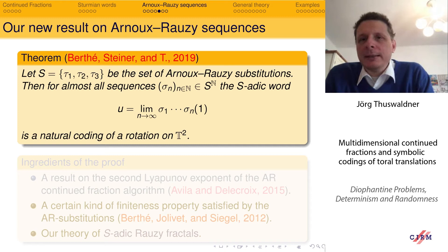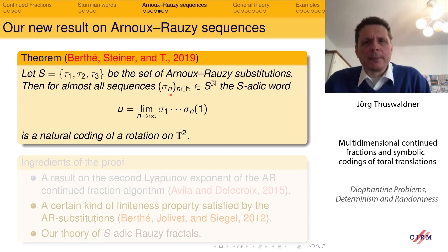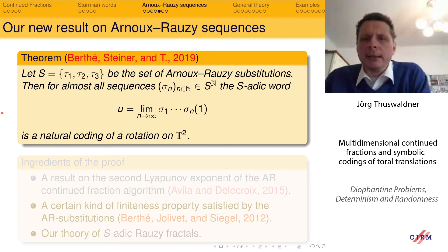If you pick Arnoux-Rauzy substitutions and create a sequence using these three substitutions, then define an S-adic word in this way, then for almost all sequences — with respect to a suitably chosen measure on this space — this word is a natural coding of a rotation on T².